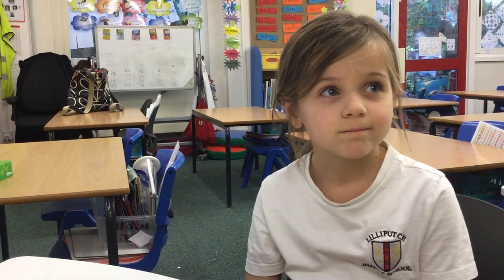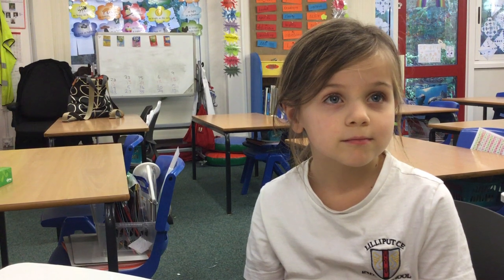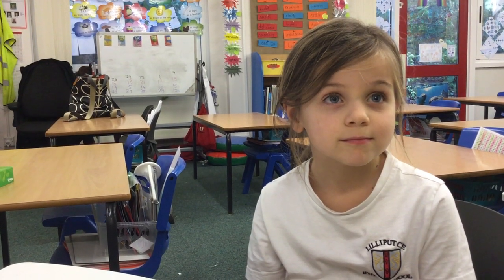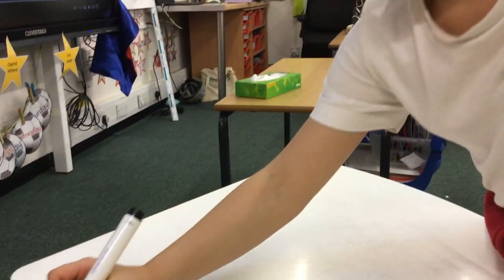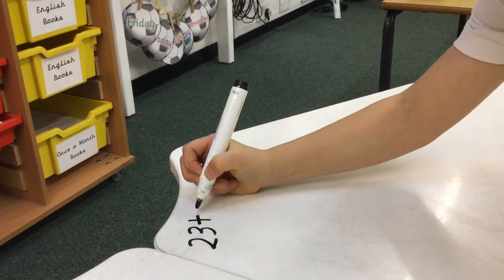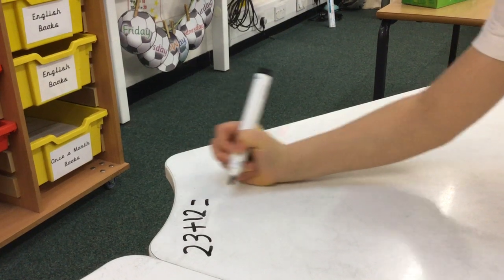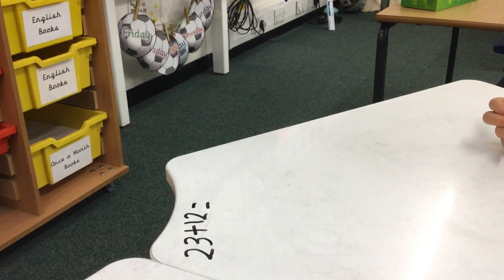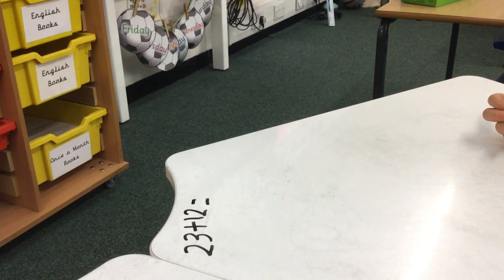Okay, I'm going to give you a number sentence and it's going to be 23 add 12. Write that down for me. And what do I always like you to write above your numbers? Tens and ones. Off you go then.